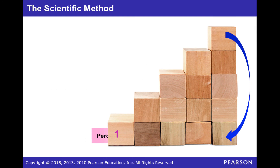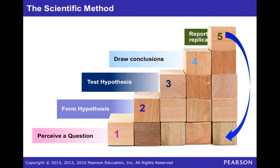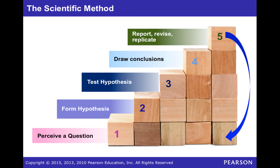Most of the original work you will be doing while reviewing this first media report was covered in Chapter 1 of your textbook. You might want to return to that chapter to review the steps for the scientific method and research ethics. Remember, the scientific method involves five steps, and once the researcher has reported, revised, and replicated their study, they may find that they perceive a new or revised question, and the process begins anew.